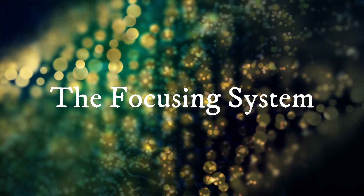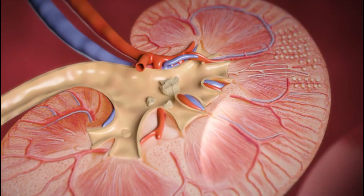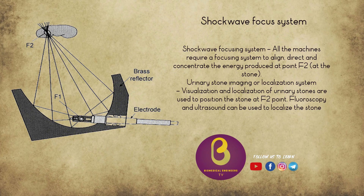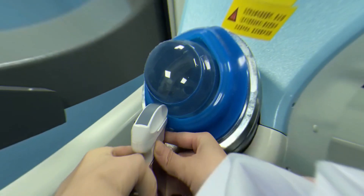The focusing system is used to direct the generator-produced shockwaves at a focal volume in a synchronous fashion. The basic geometric principle used in most lithotripters is that of an ellipse. Shockwaves are created at one focal point F1 and converge at the second focal point F2. The target zone or blast path is the three-dimensional area at F2 where shockwaves are concentrated and fragmentation occurs.